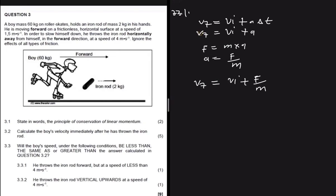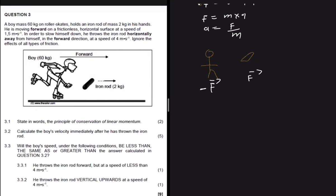When the boy applies a force on the rod, the rod applies an equal and opposite force back on the boy, decelerating him. The harder the boy accelerates the rod, the more his own speed decreases. If he throws the rod at a speed less than 4 m/s, he decelerates less than in 3.2, so his speed after will be greater than the answer calculated in 3.2.